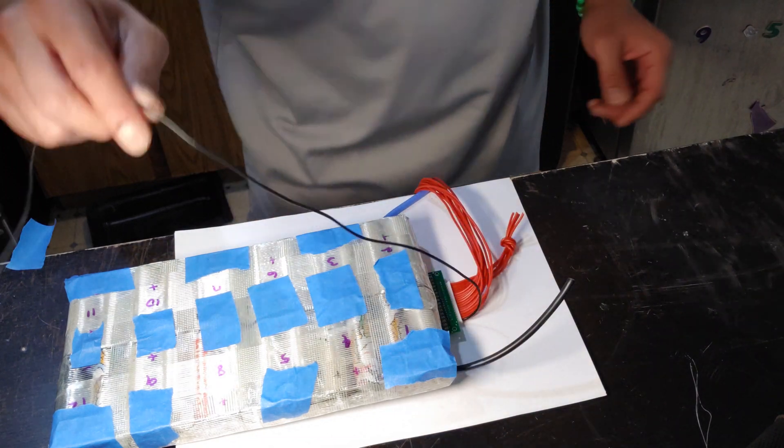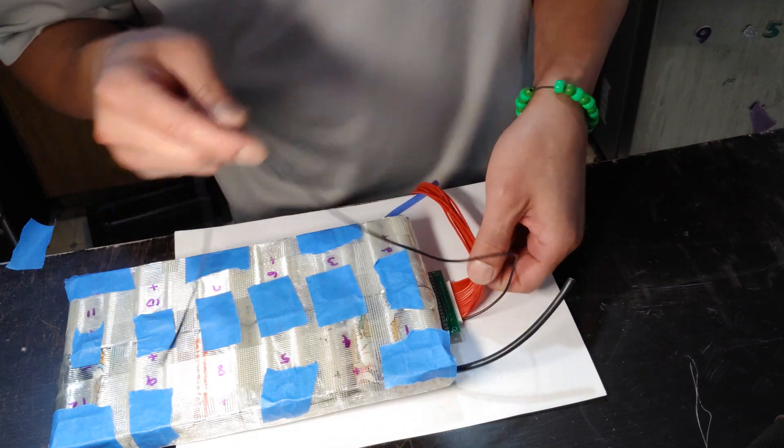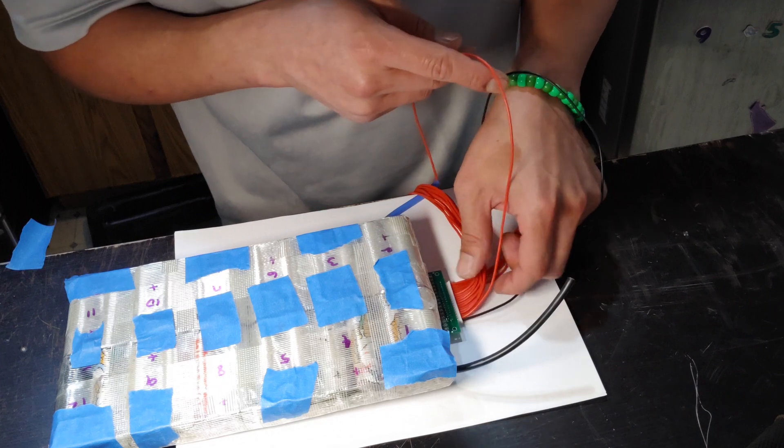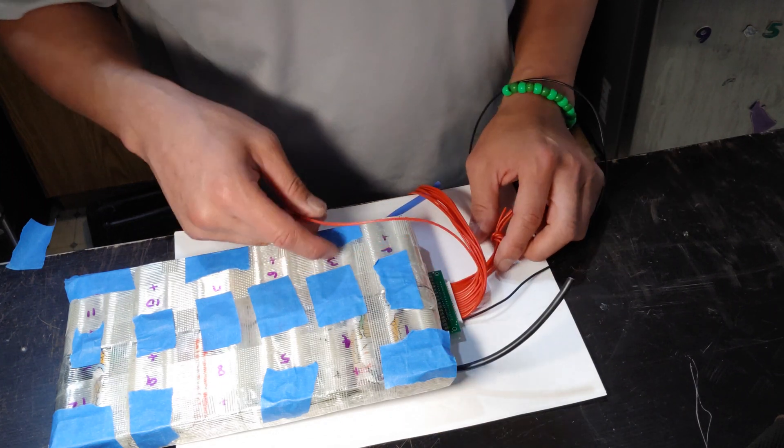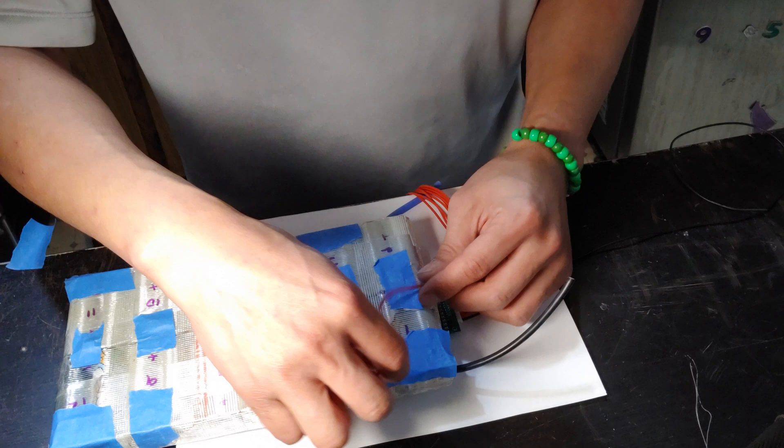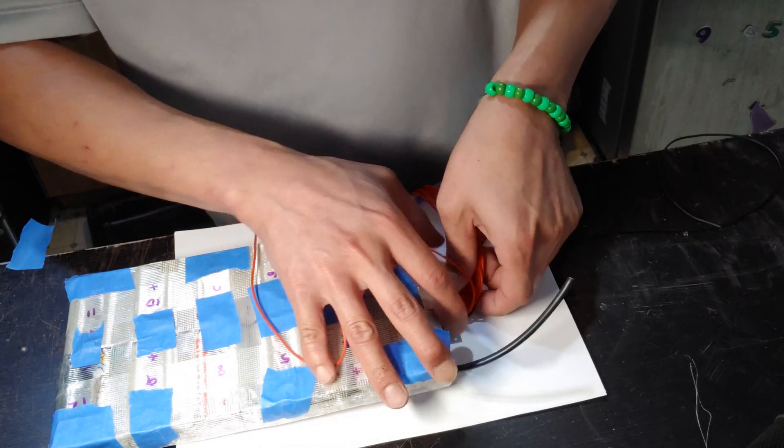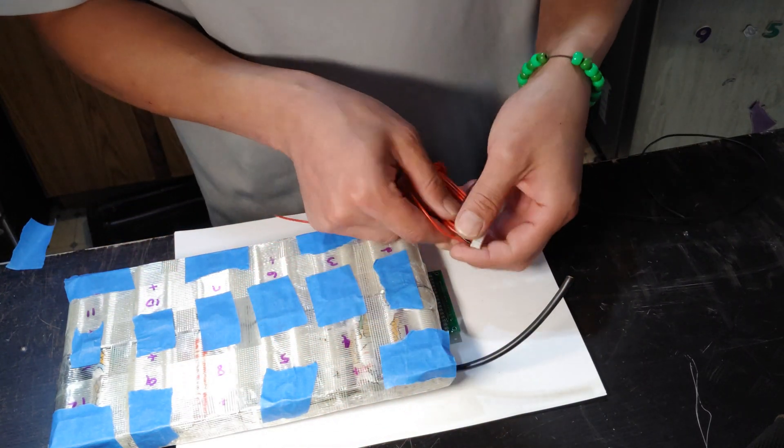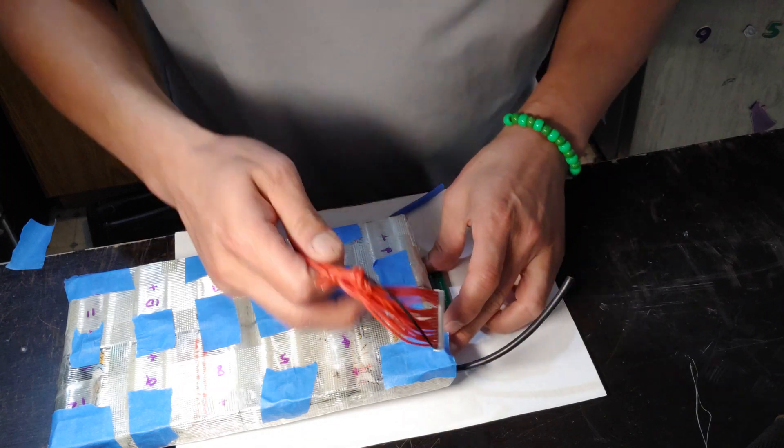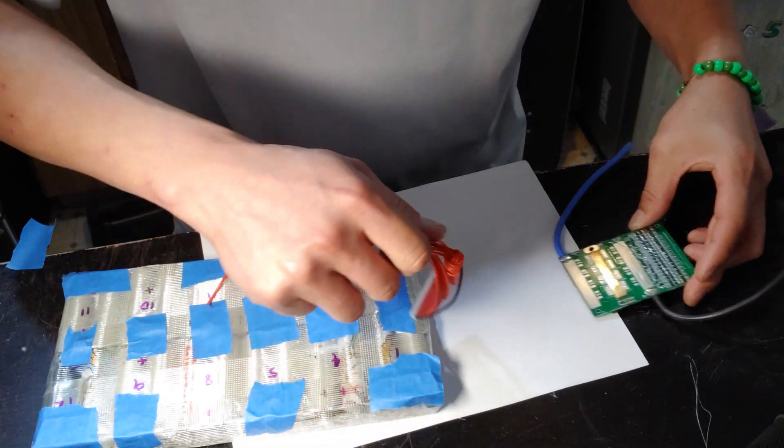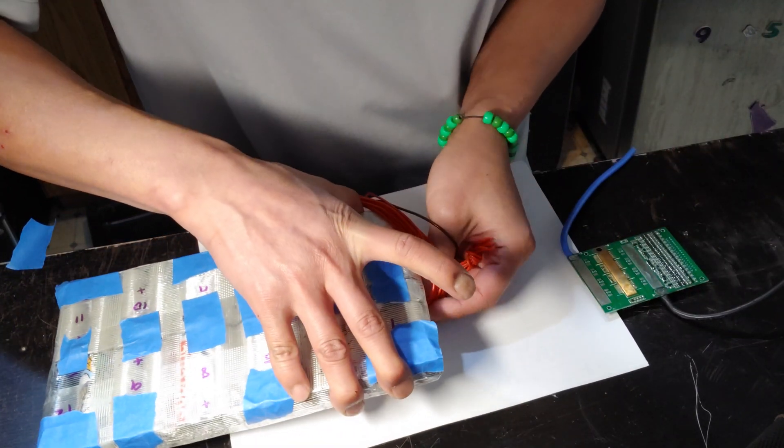So how you connect it is the B minus, it's going to always start with B minus and then it's going to be 1, 2, 3, 4, and so on until you get to 12. So it's going to go like this. I'm just going to set this over here, just have enough to reach the BMS on the other side.